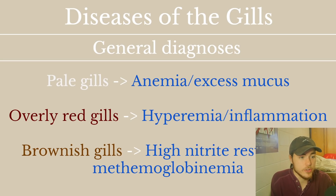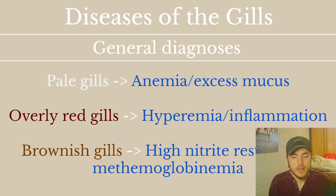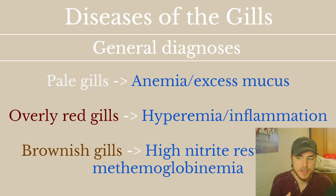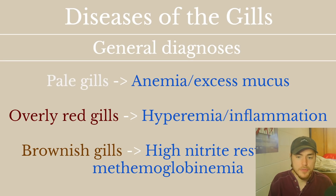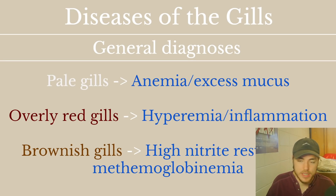For diseases of the gills: pale gills can be due to anemia, or excess mucus on the gills can cause them to appear pale. Gills are meant to be red because they contain gill lamellae with lots of blood that take oxygen from the water. But if they're overly dark deep red, beyond what you'd expect, it can be due to hyperemia — an over-excess of blood — or inflammation. Brownish gills are usually a result of high nitrites, resulting in methemoglobinemia — the browning of gills due to high nitrate levels in the water.